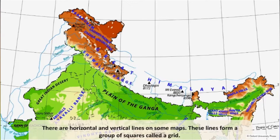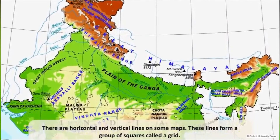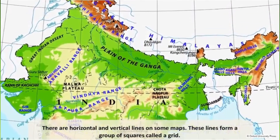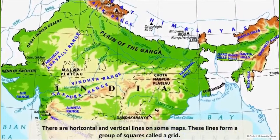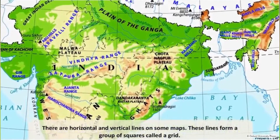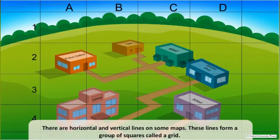There are horizontal and vertical lines on some maps. These lines form a group of squares. It is called a grid. Each grid is allotted a number and a letter which helps us to locate places on a map.